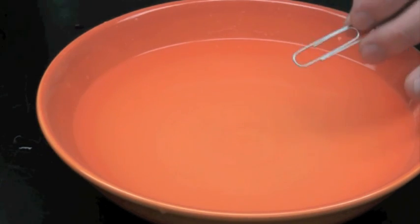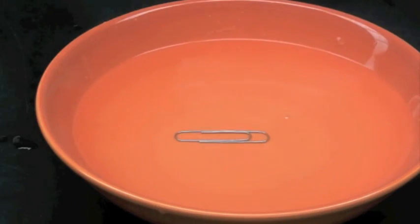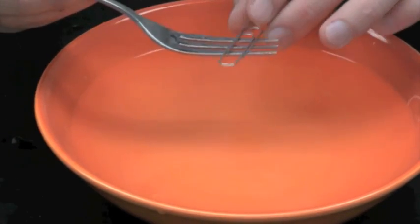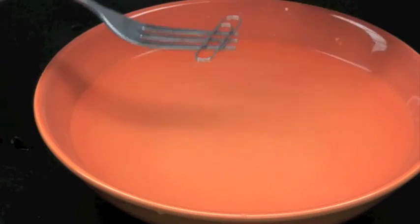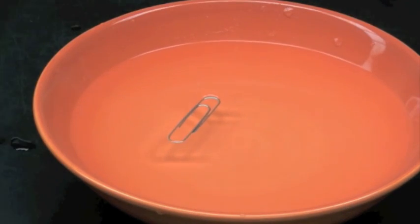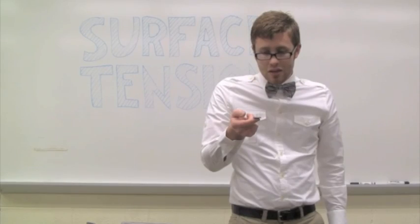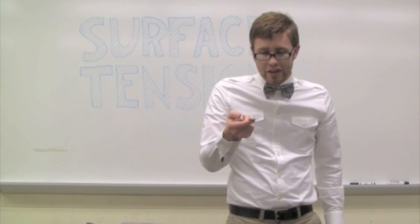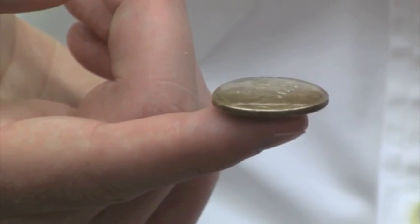For instance, this paper clip is more dense than the water. Therefore, it sinks. But if we delicately place the paper clip, it sits on the surface of the water because of surface tension. Another way to view surface tension is to put water on a cone. See that bubble on there? That's surface tension at its finest.